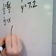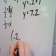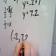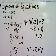So our solution is 0.2 or 1/5 as the x value and 7.2 as the y value. And if we were to graph these two equations, this is the point where the two of them would intersect.